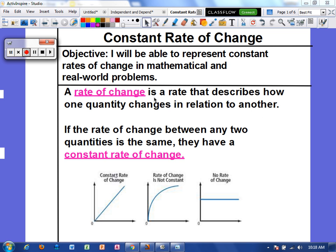So a rate of change is a rate that describes how one quantity changes in relation to another. And whenever that change is consistent between quantities, which means it's the same every time, then it's going to be a constant rate of change.